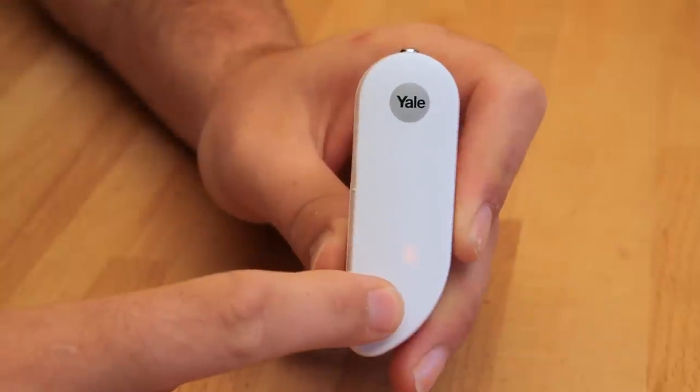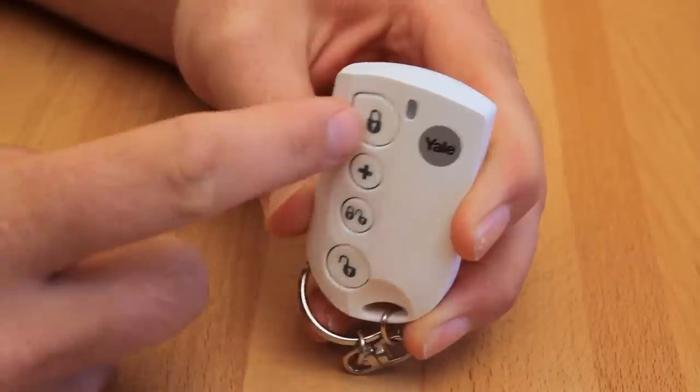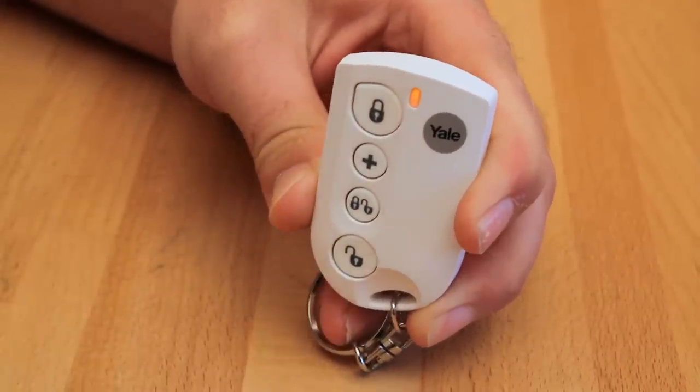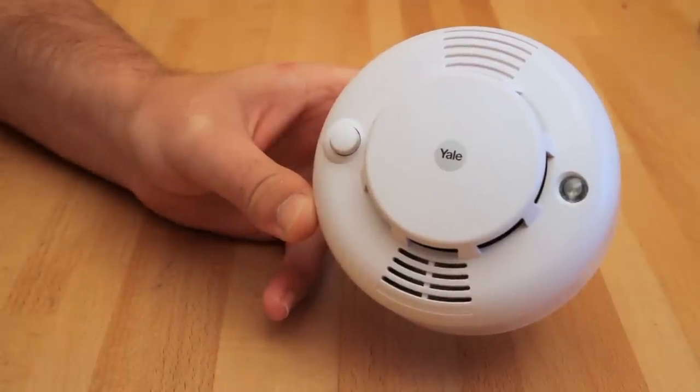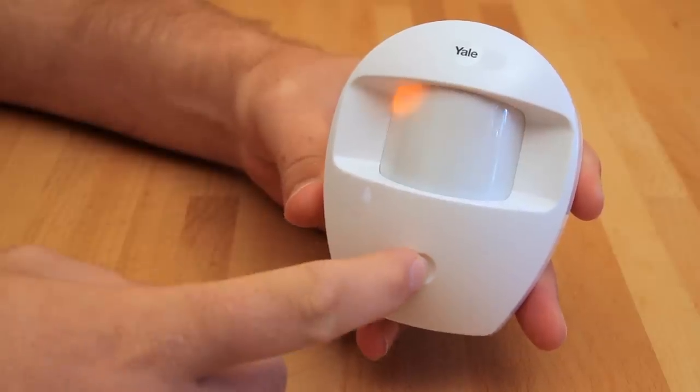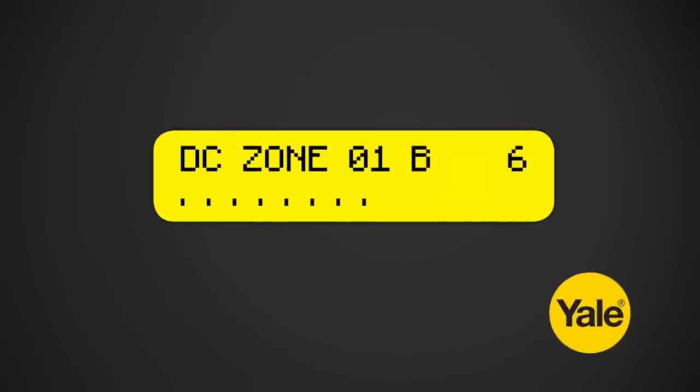Before proceeding to mount the components, physically check the control panel will receive the system radio transmissions. To do this, hold the components in the desired mounting locations and one by one press the test button on each component. If the sensor signal reached the control panel, the screen will briefly display a message like this.